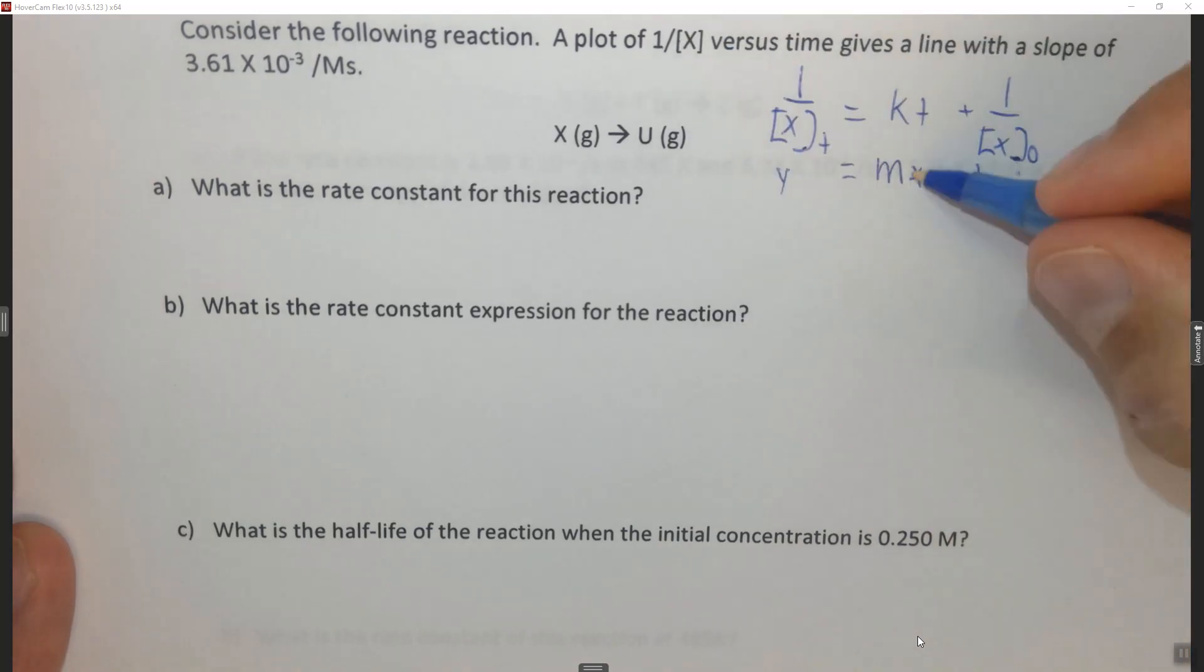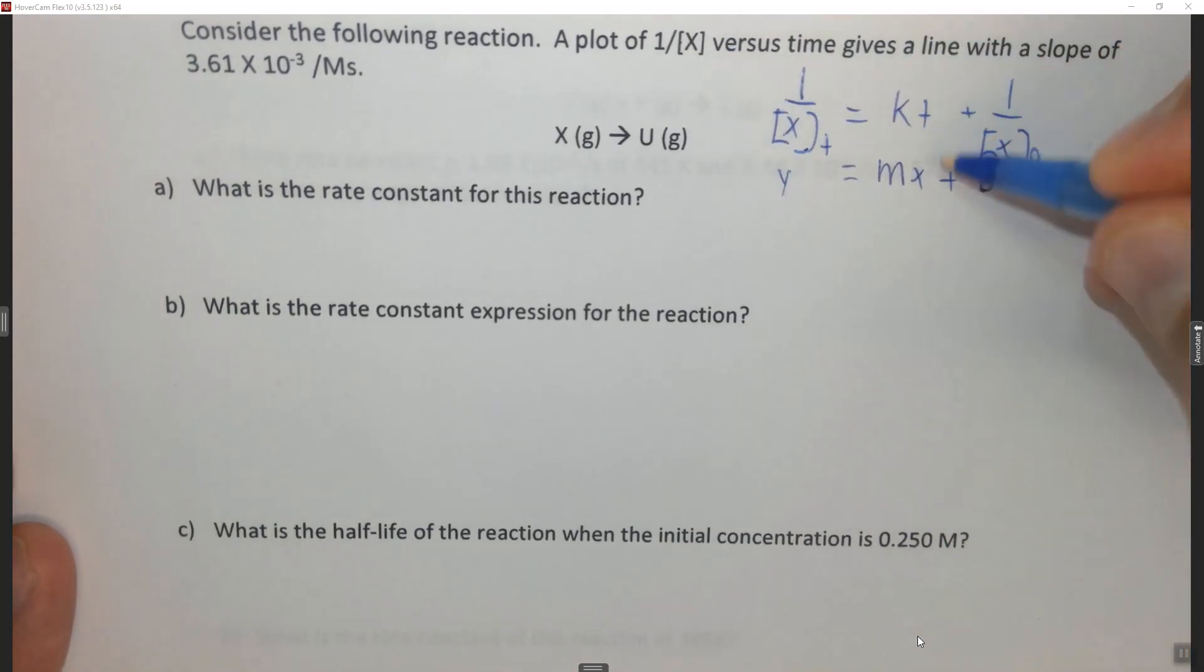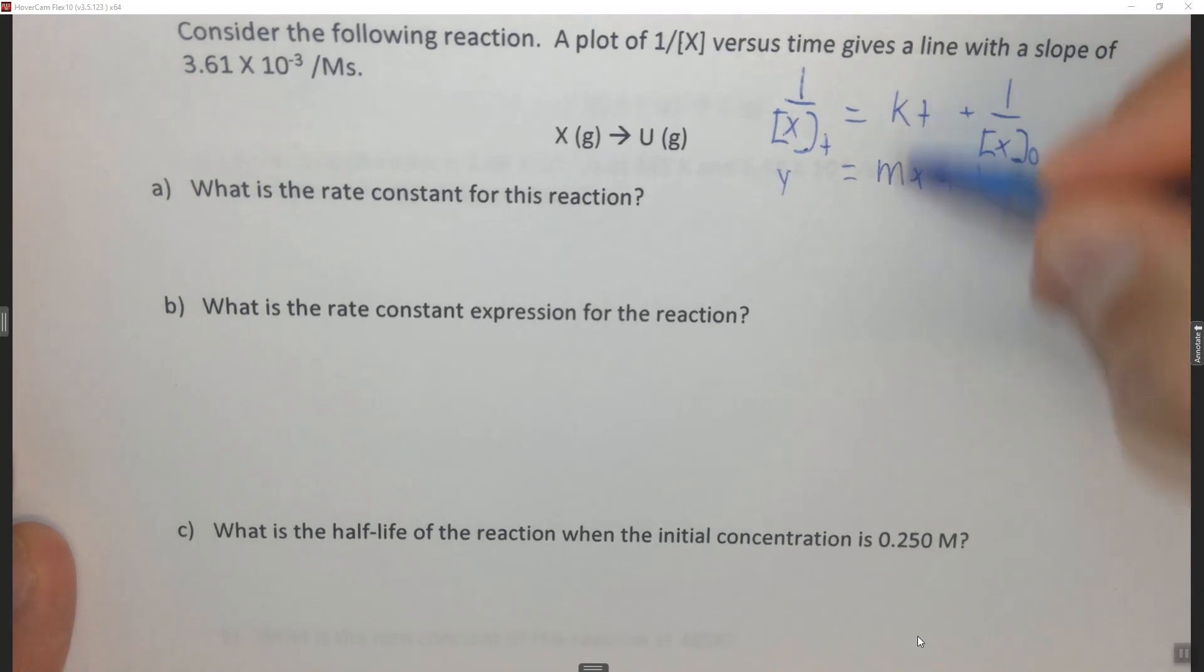...the slope of the line will equal the rate constant for a second-order reaction. So we learn two things here: we learn both the rate constant, because that is equal to the slope.